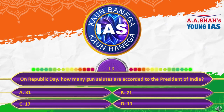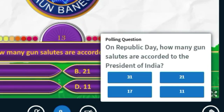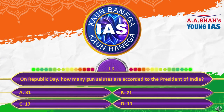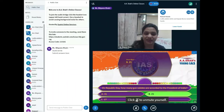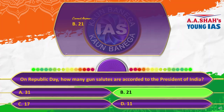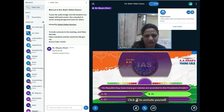On Republic Day, how many gun salutes are accorded to the President of India? A, 31; B, 21; C, 17; or D, 11. The correct answer is B, 21. In Hindi, they say 'ikkis topo ki salami' — ikkis means 21. These gun salutes are fired in the air and given to the President of India.